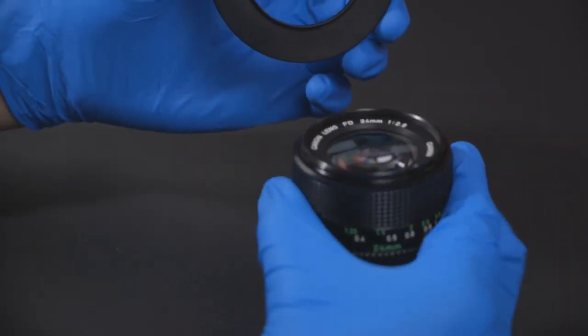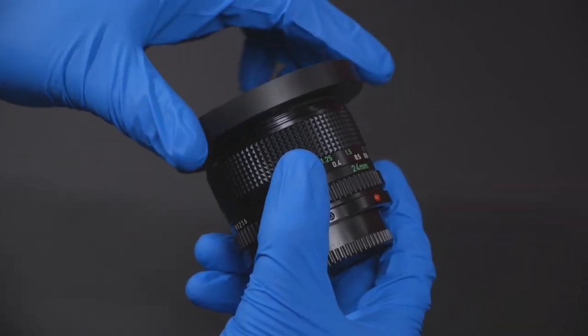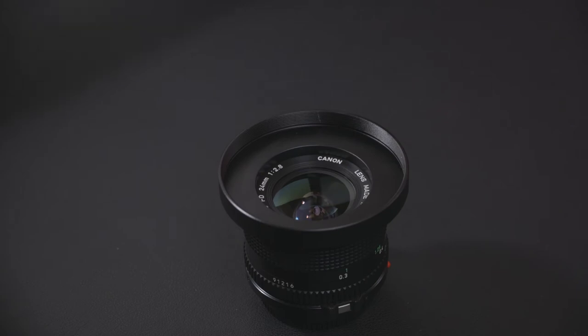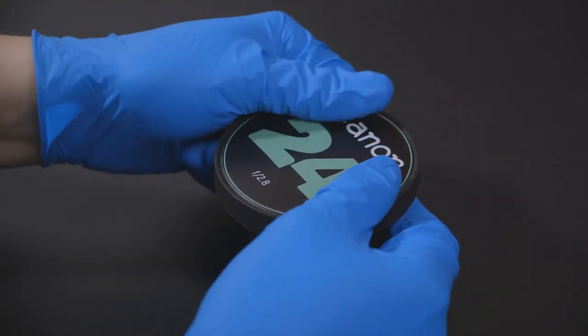This step-up ring has a 77mm front thread. Go ahead and apply your custom 80mm lens cap to the front of your lens.